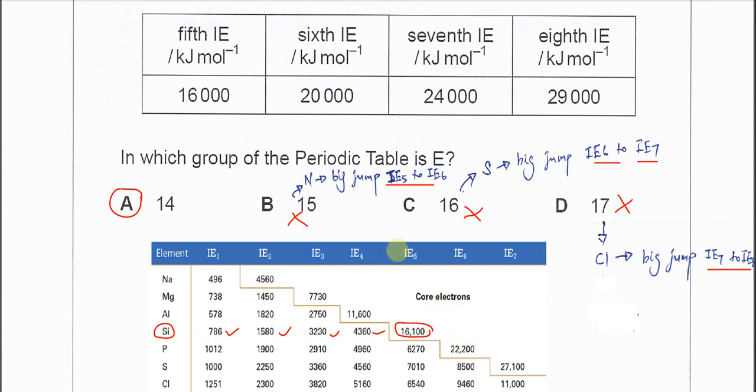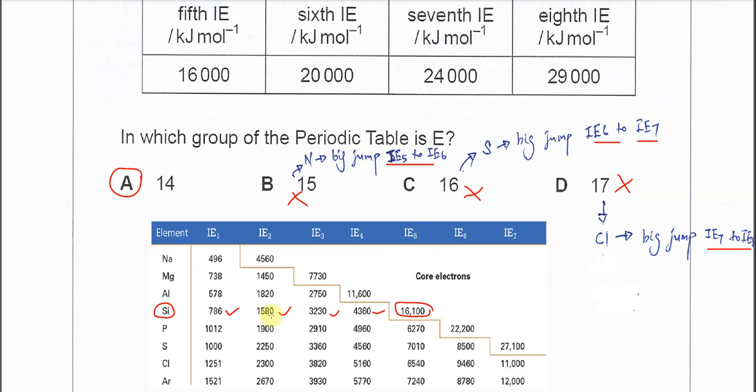We don't actually need to use this table to get the answer; it's just to show you it's silicon in group 14. From the data, we can see that B, C, and D are not the answer because there's no big jump between those ionization energies. Therefore, it must be group 14, answer A. The big jump must happen before the fifth ionization energy.